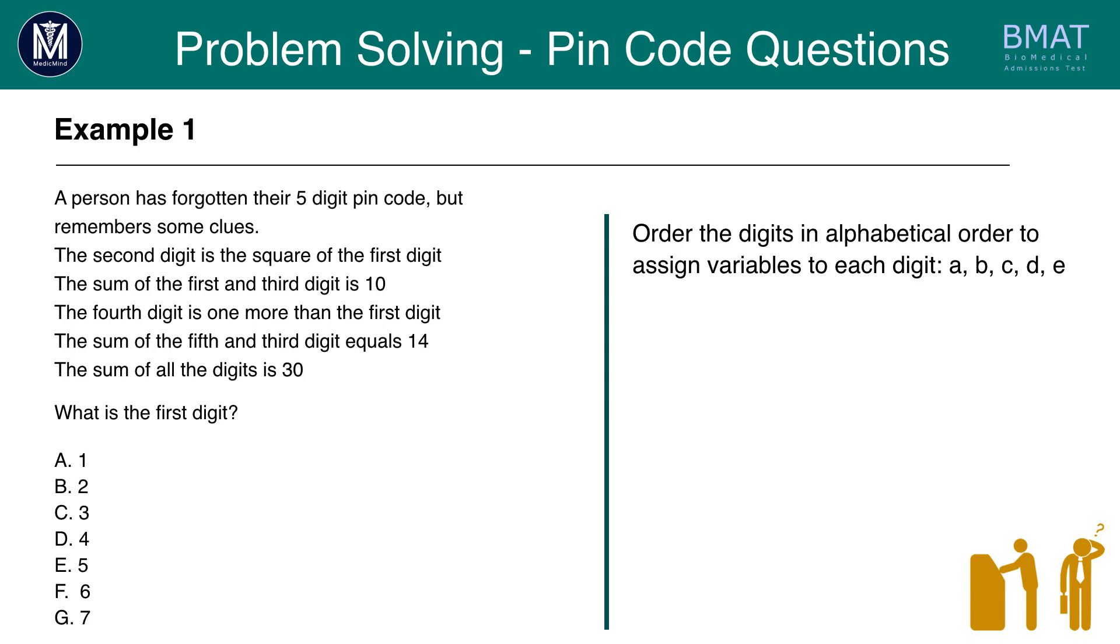We are told that the second digit is a square of the first digit. This means B representing the second digit is A squared the first digit. We're also told the sum of the first digit and the third digit is 10. Therefore A plus C equals 10, and we can rewrite this as C equals 10 minus A. We're then told the fourth digit is one more than the first digit. The fourth digit is D, so D equals A plus 1.